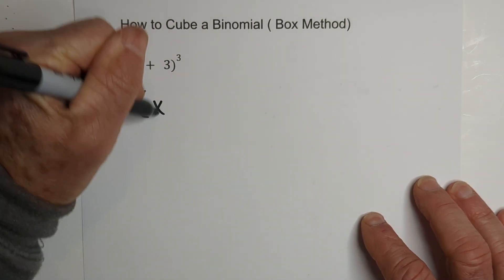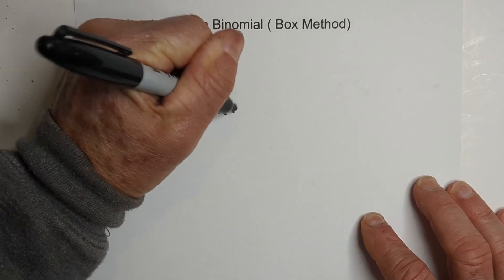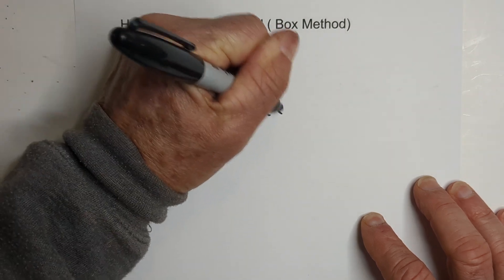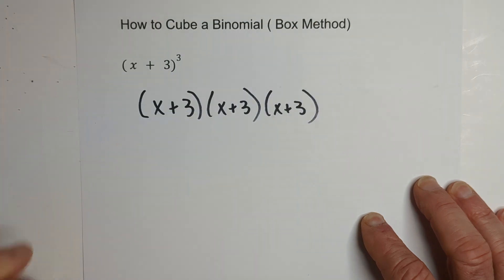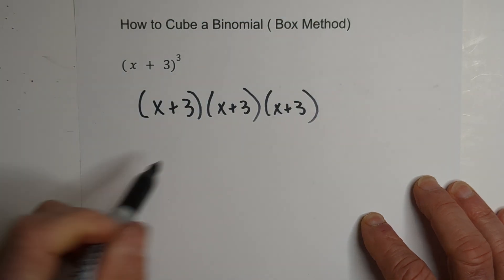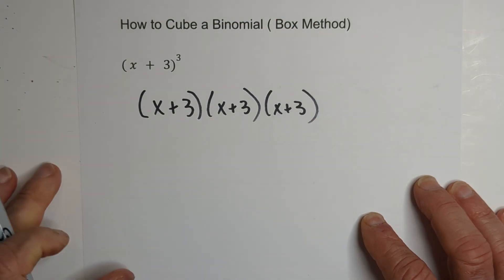We know it's (x + 3) times (x + 3) times (x + 3). Okay, so what happens is you end up with a lot going on, so you can use the box method.